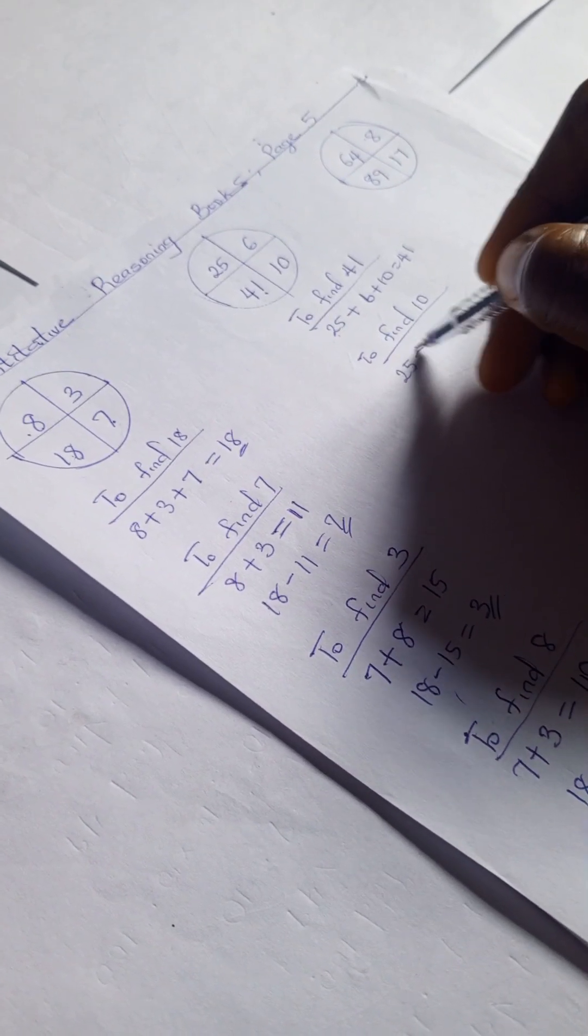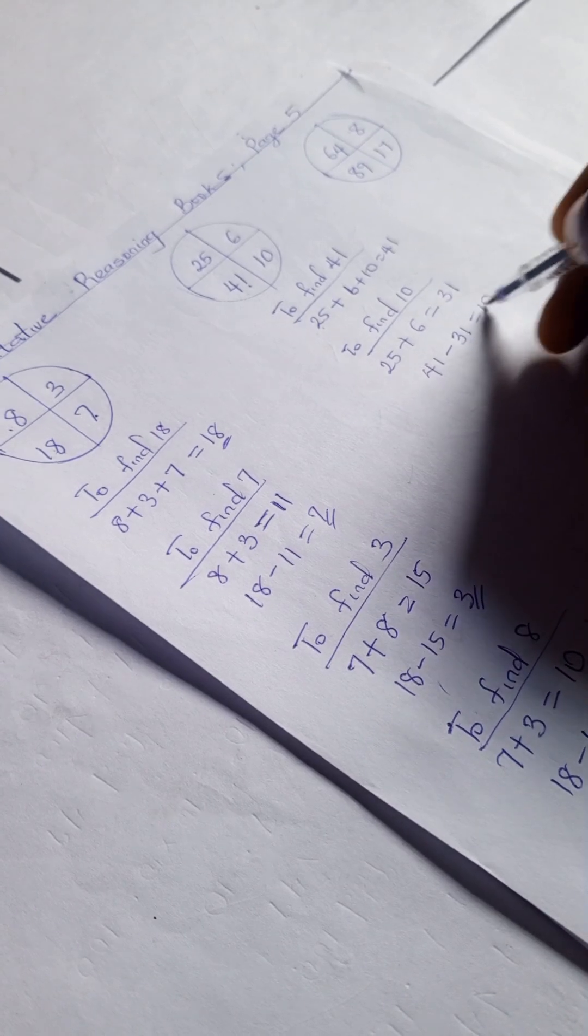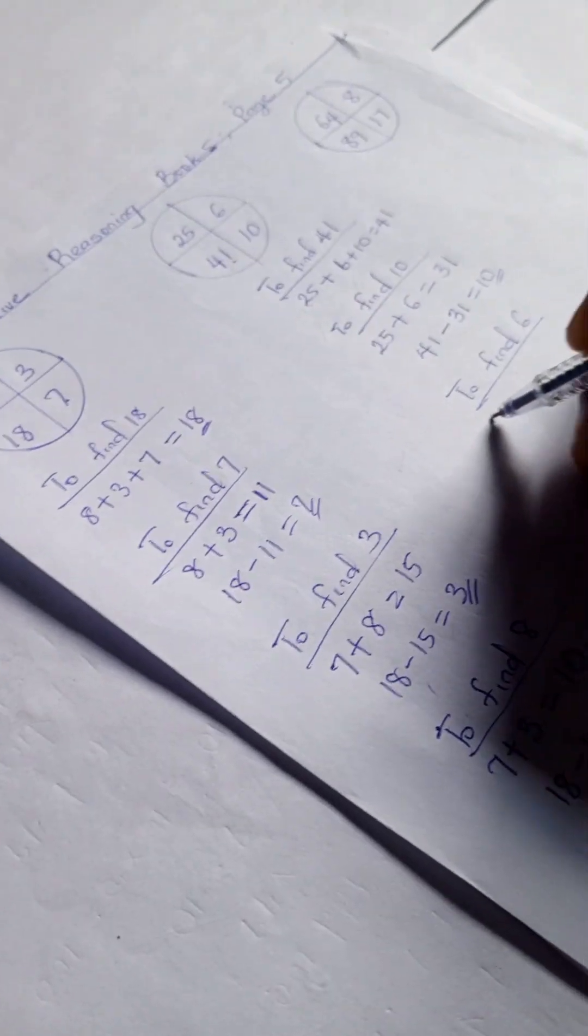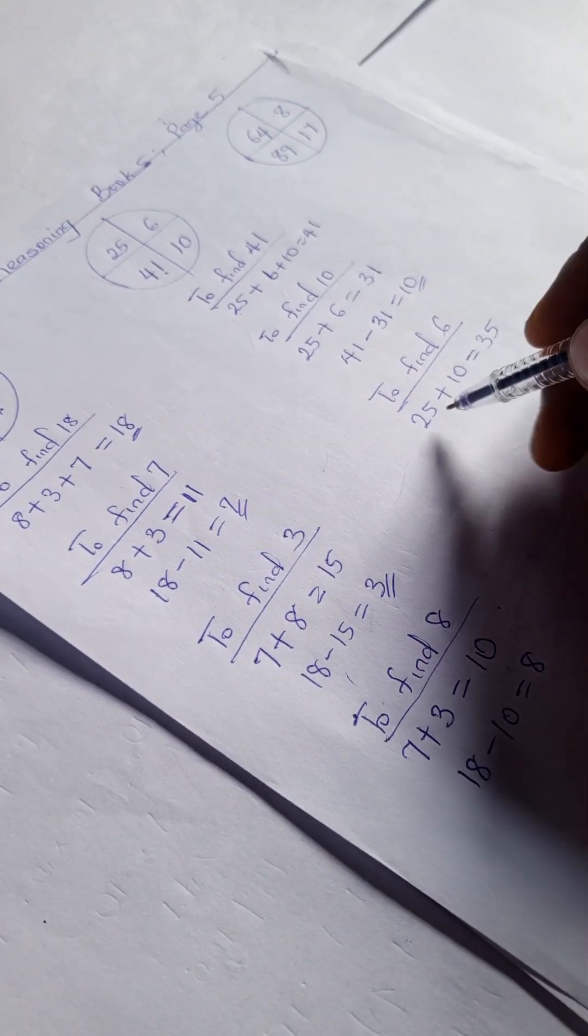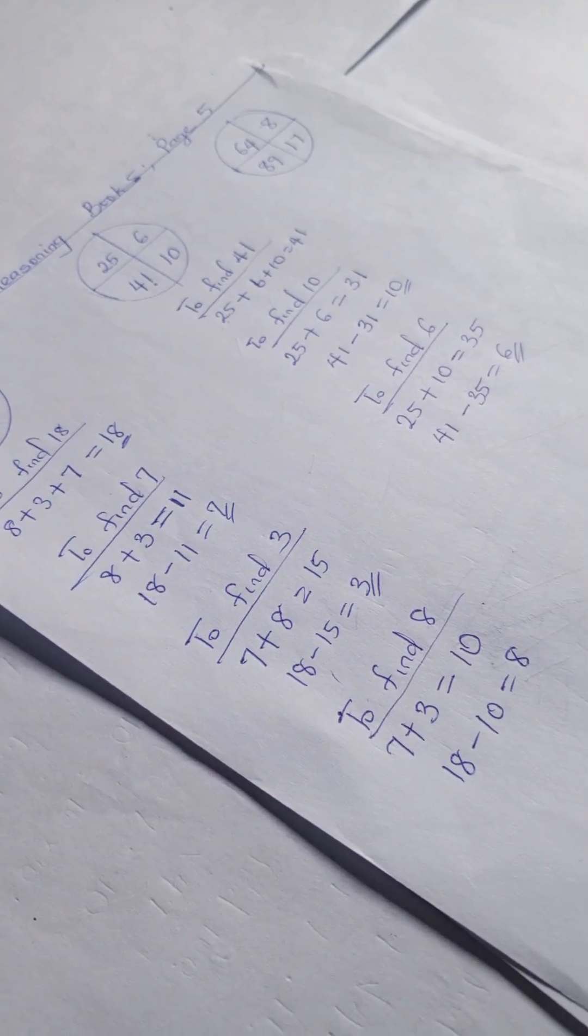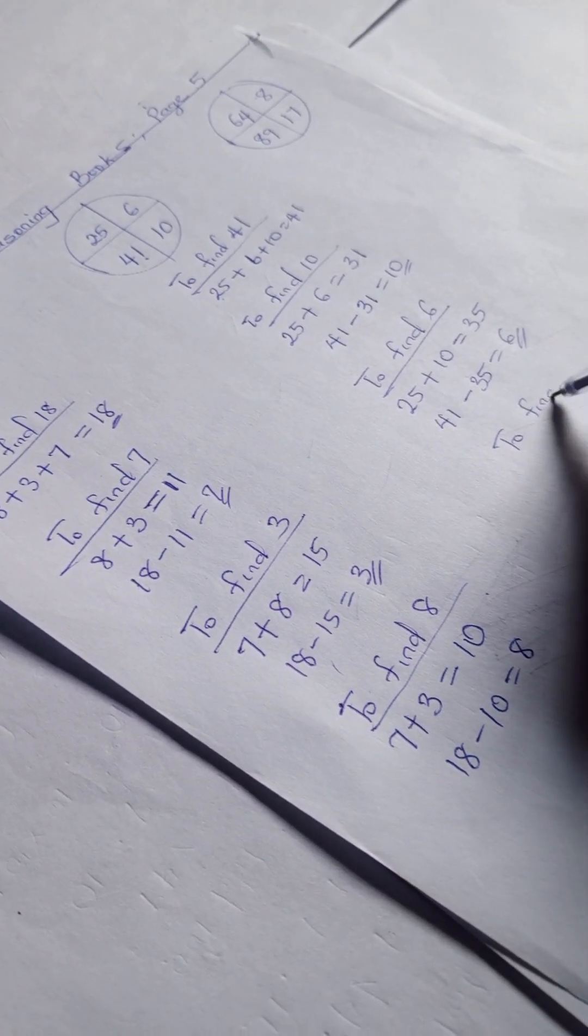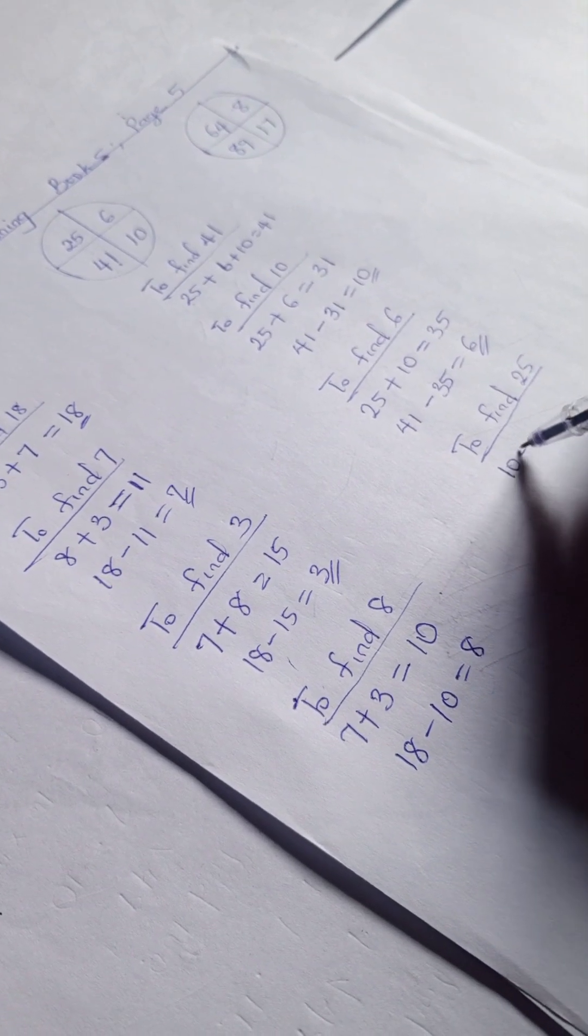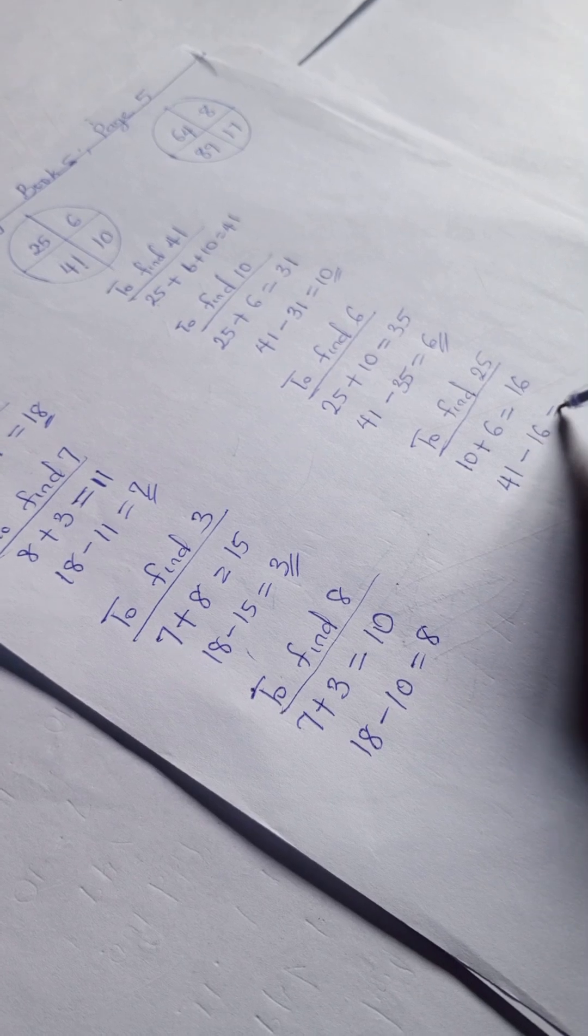So we have this gives us 6. And to find this 25, we have 10 plus 6, this was 16, and 41 minus 16 equals 25.